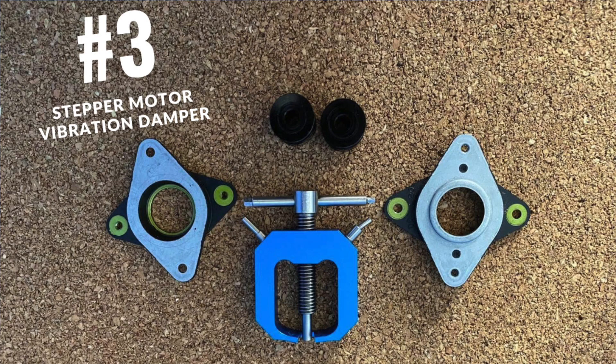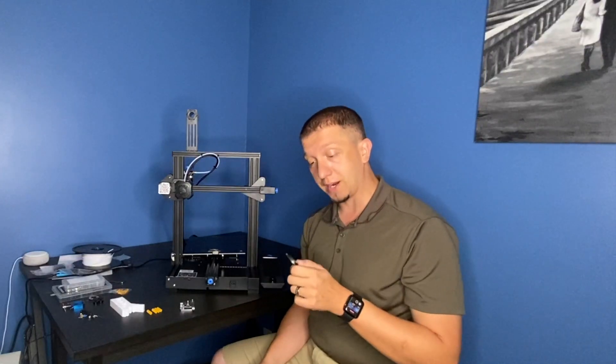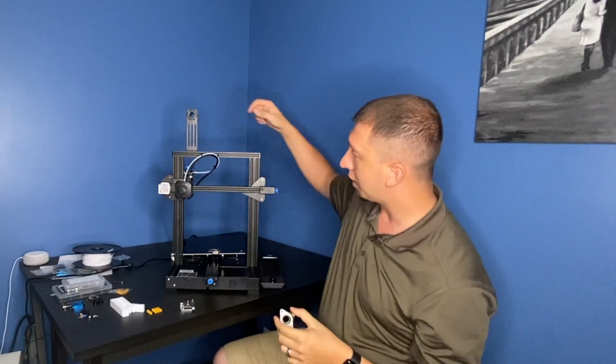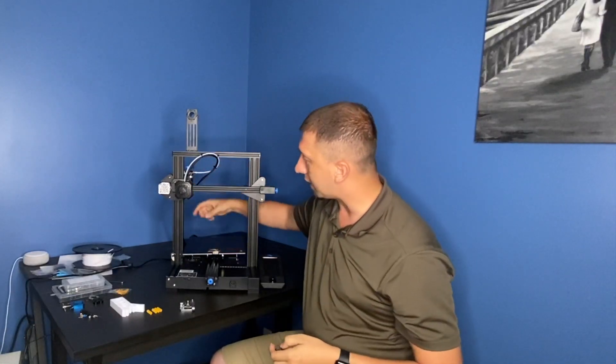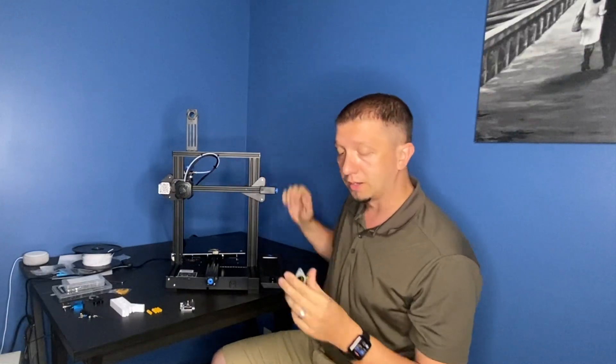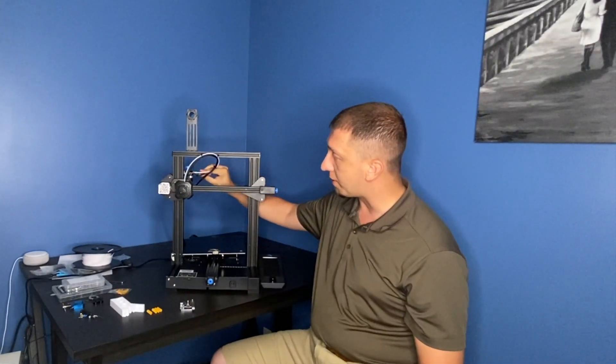Number three, one of my most favorite upgrades is the sound dampener. It's two metal pieces that go on your motors on your Y and X axis. You can put it on the extruder stepper motor, but you don't have to. It goes in place and goes between the frame and that motor.